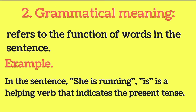The second type of meaning is grammatical meaning. Grammatical meaning refers to the function of words in a sentence. For example, in the sentence 'she is running,' the word 'is' is a helping word that indicates the present tense. So this kind of meaning is grammatical meaning.